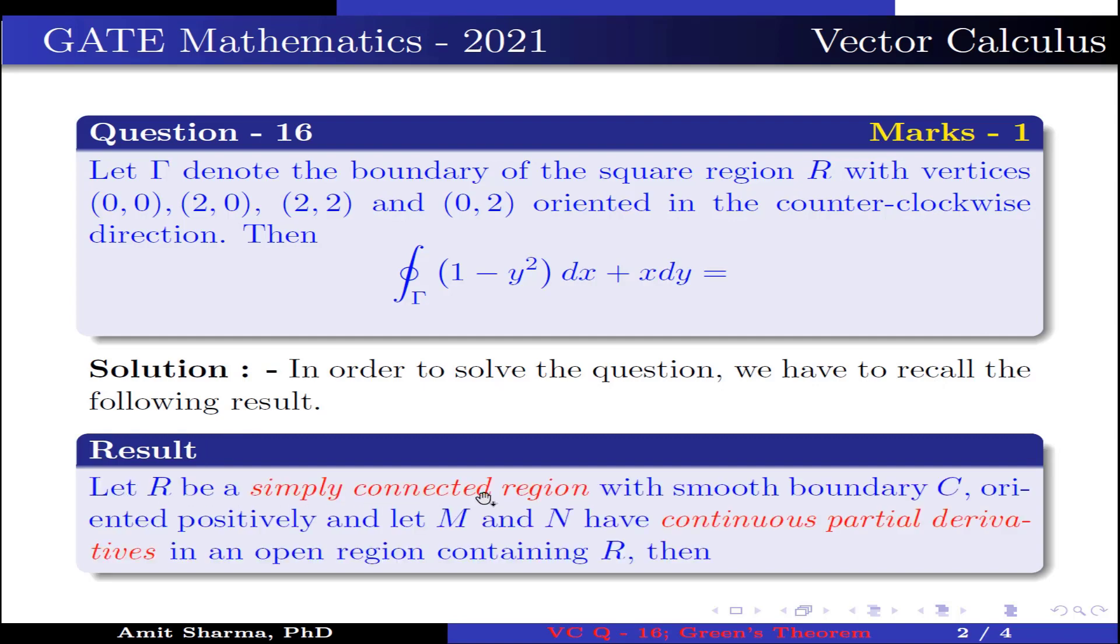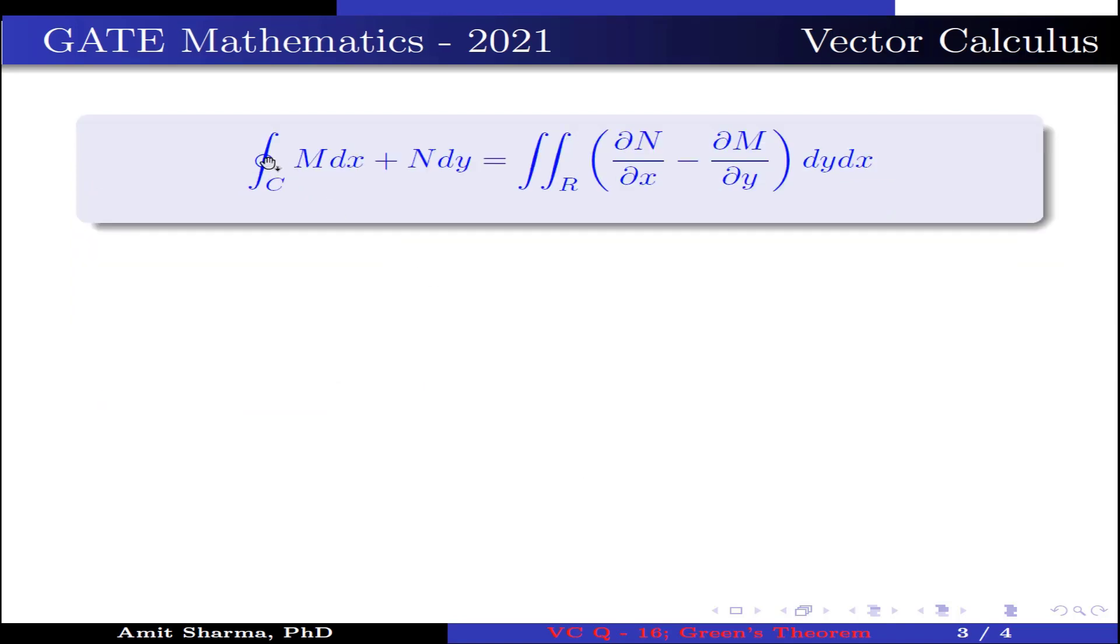Let R be a simply connected region with smooth boundary C oriented positively. Let M and N have continuous partial derivatives in an open region containing R. Then, closed integration over C M dx plus N dy is equal to double integration over R, ∂N/∂x minus ∂M/∂y dy dx.